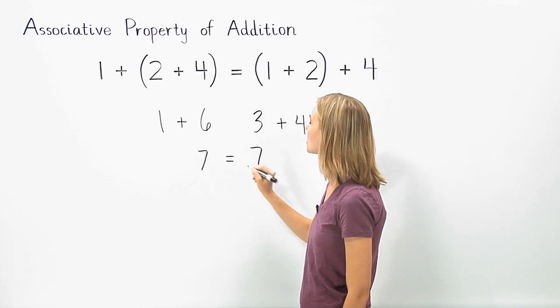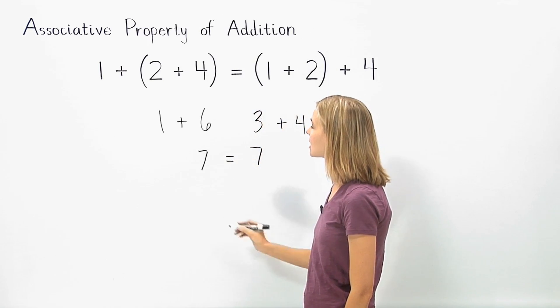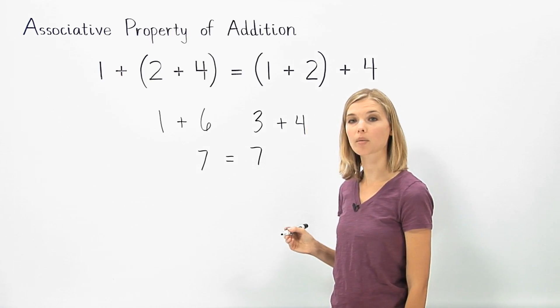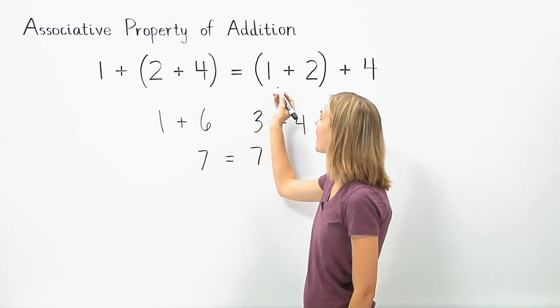So we have 7 equals 7. Notice that the sum is the same on both sides of the problem, even though we grouped the addends differently.